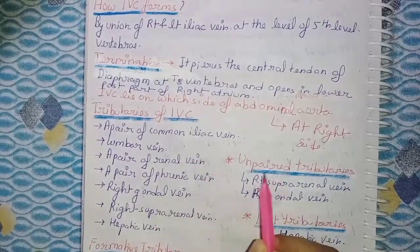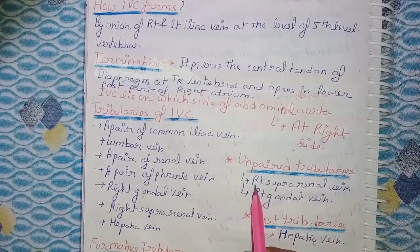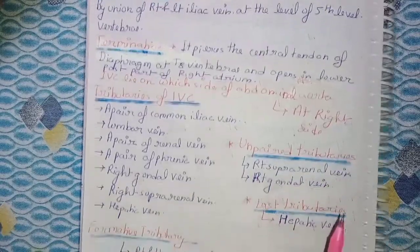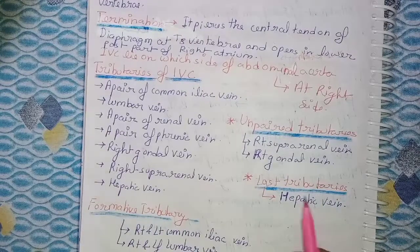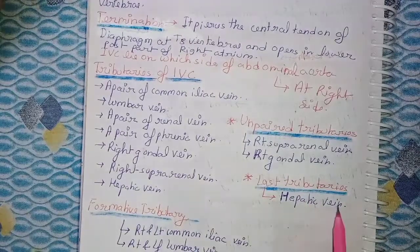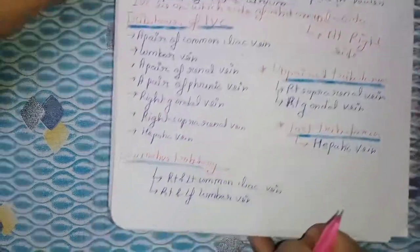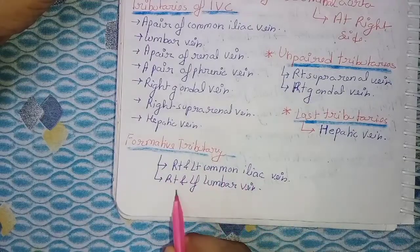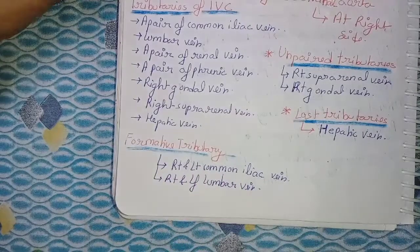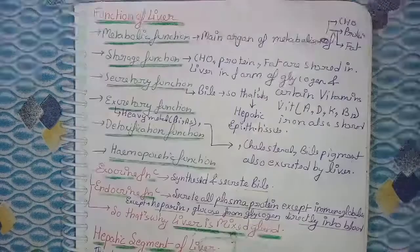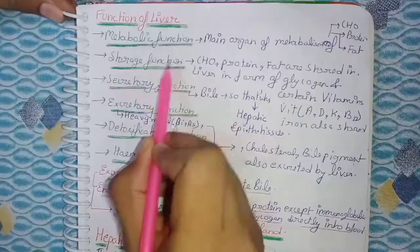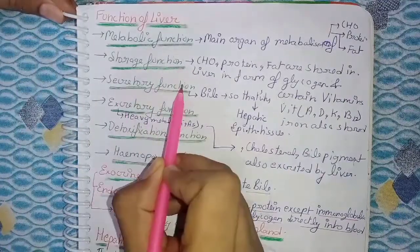There are also unpaired tributaries such as the right suprarenal vein and right gonadal vein. Formative tributaries are the right and left common iliac veins. Right and left lumbar veins are also present.